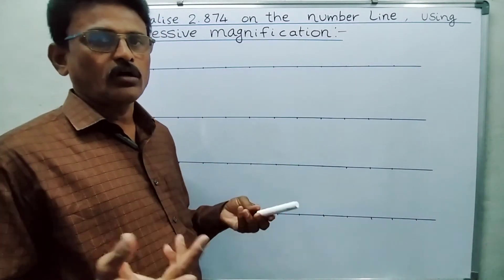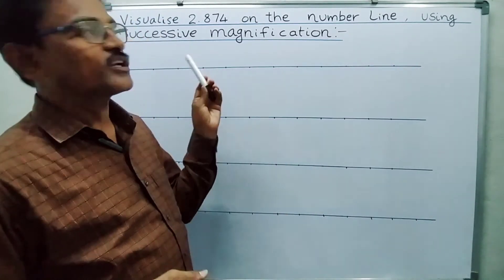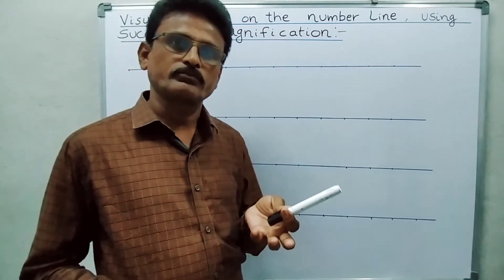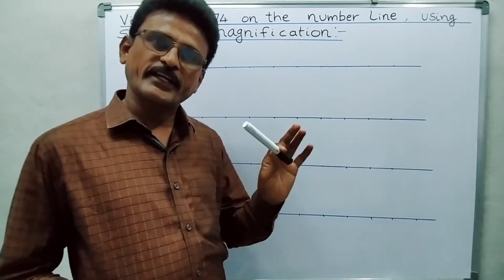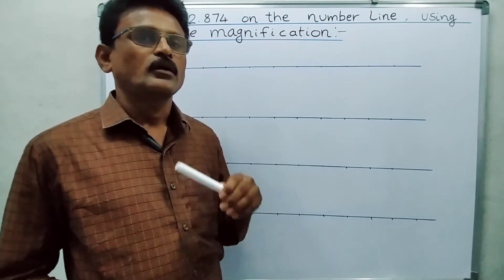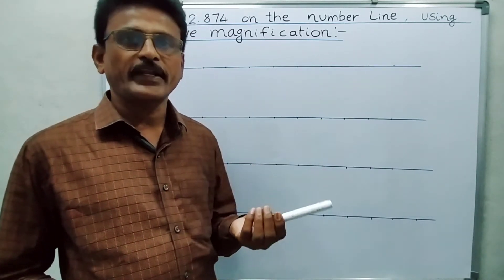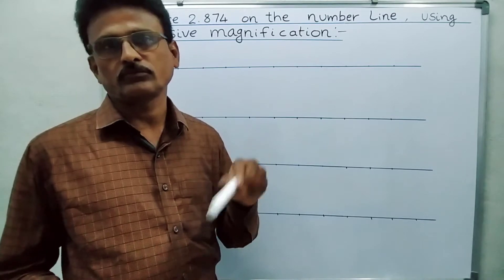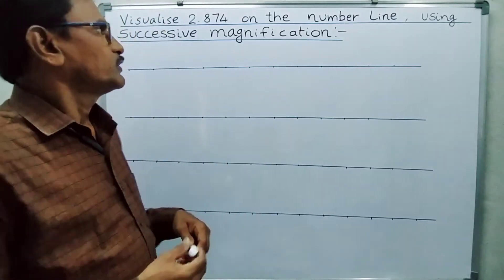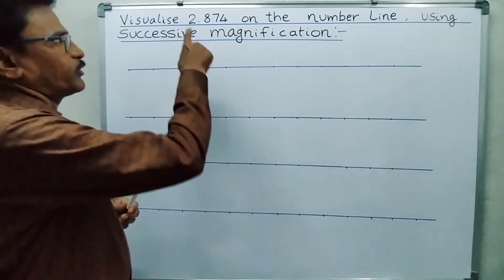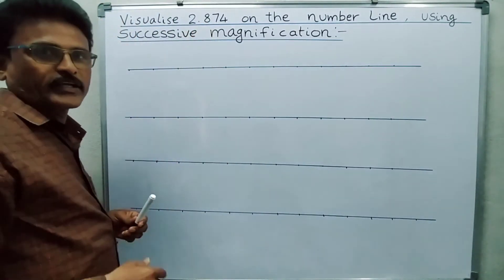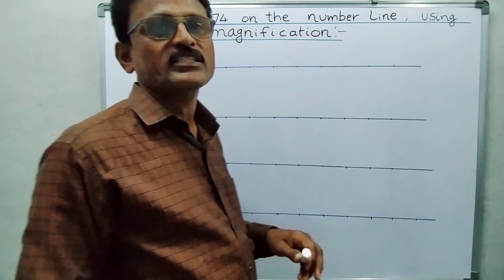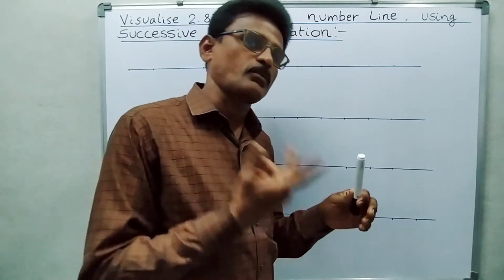Rational numbers are two types in decimal form: terminating decimal and non-terminating repeating decimal. In the first example, I am going to take the terminating decimal 2.874.